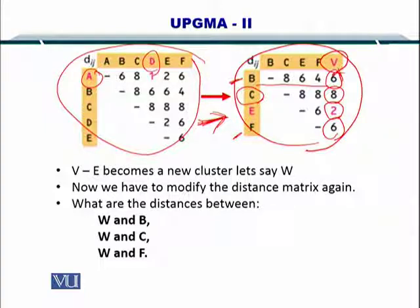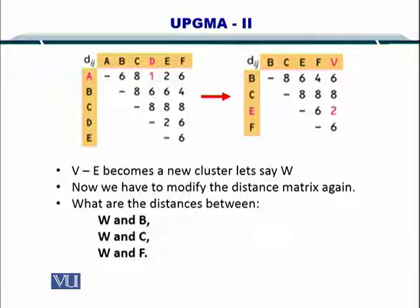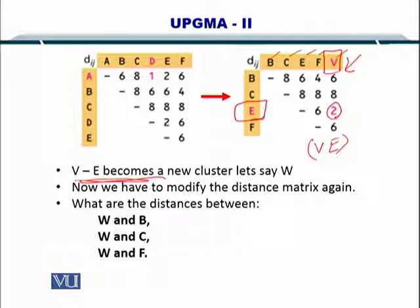Now the next step is to create the next cluster. The approach is the same. You simply look at this new matrix and find out the shortest distance between the sequences or cluster. Remember B, C, E and F are still sequences while V is a cluster. You can see that 2 is the smallest value in this distance matrix. We need to create a cluster between V and E. So V and E become a cluster, let's call it W.